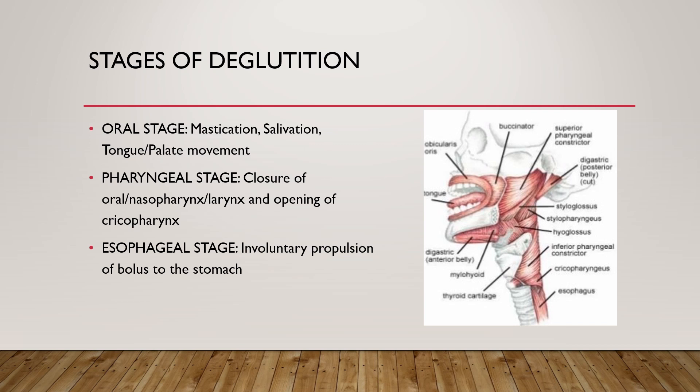The oral stage moves the bolus from the oral cavity to the pharyngeal part. In the pharyngeal stage, there is closure of the oral, nasopharyngeal, and laryngeal parts, followed by opening of the cricopharynx. The esophageal stage is the involuntary stage in which there is propulsion of the bolus throughout the esophagus to the stomach.